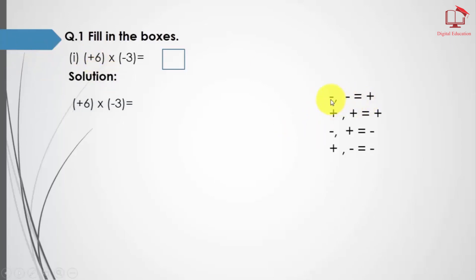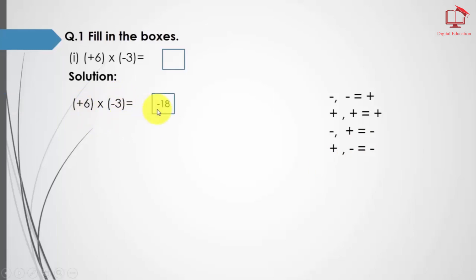I am repeating: if we have two minus signs they become positive; if we have two positive signs they become positive; if the first one is negative and the second is positive, they become negative; and if the first is positive and the second is negative, it becomes negative. In multiplications, we multiply the signs as well as the integers.